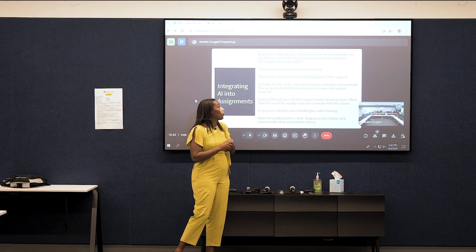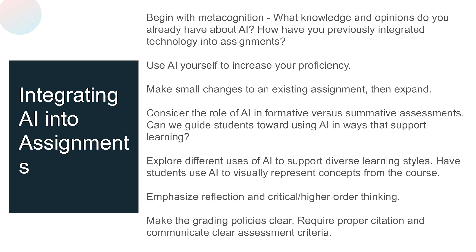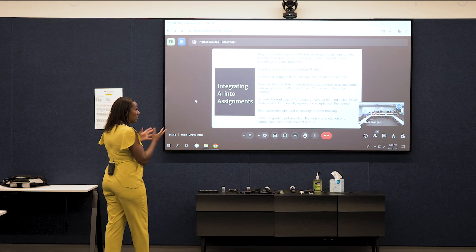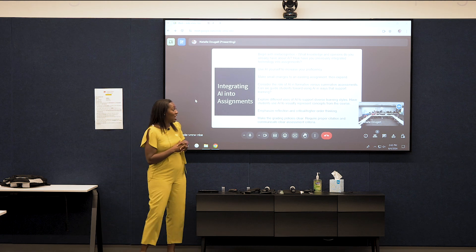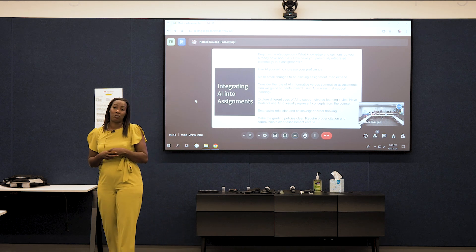Consider using AI for formative assessments, where you're not trying to evaluate proficiency or mastery of a subject. Explore different uses of AI to support different learning styles — students can use AI to create a visual to supplement whatever concept they're representing in an assignment. Emphasize reflection and critical higher-order thinking; I always ask students how AI helped them and how they can see it being useful in other applications. Lastly, make grading policies clear, require proper citation, and communicate clear assessment criteria around AI use.